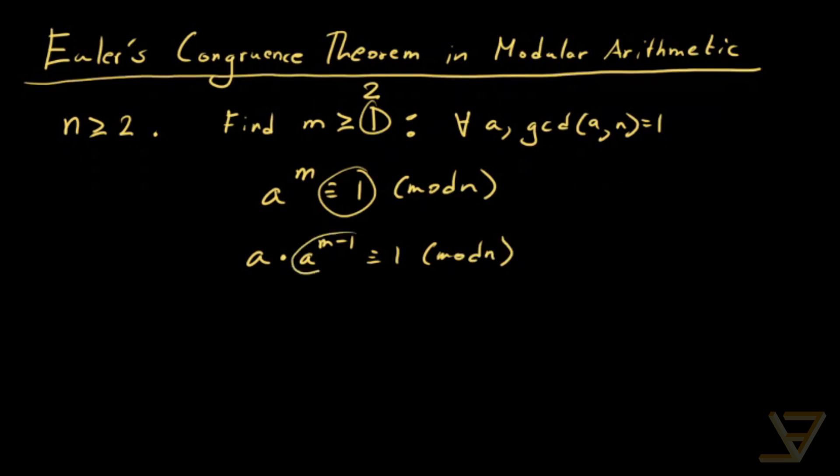So that would mean that a to the power of m minus 1 falls into the inverse residue class of a. This mod congruent to the residue of 1 mod n can be very useful.